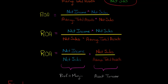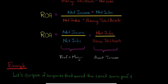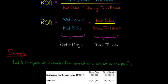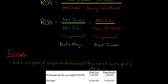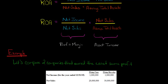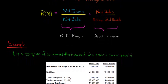It's just another way of thinking about ROA, and it helps when analyzing a firm. Let's say we have two companies — flying cars and flying bicycles — and they each earned $1 million in net income for the year ended December 31st, 2019. Flying cars had $20 million in net sales and flying bicycles had $30 million in net sales, which we'll need for the ROA decomposition.